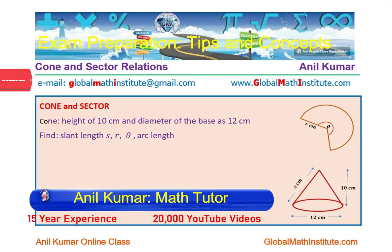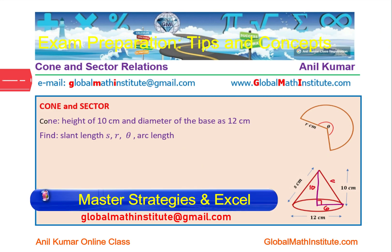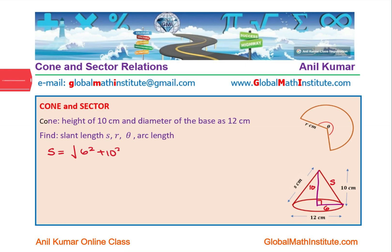We are given a cone whose diameter is 12. If I draw a perpendicular and consider the two-dimensional view, the radius is going to be 6. We know height is 10, so this is 10. You can find this slant length using Pythagorean theorem. Let us figure this out.